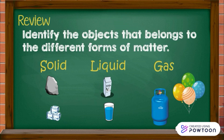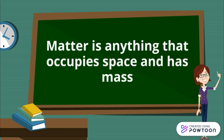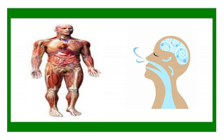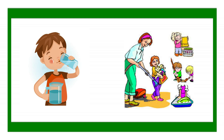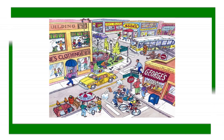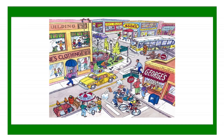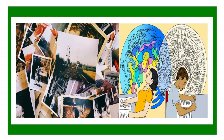How do we define matter? Matter is anything that occupies space and has mass. It means everything around you is matter. Your body is made up of matter. The air that you breathe is matter. The water that you drink and use for cleaning is matter. Any object that you use daily, anything that you see, and even what you do not see is matter.